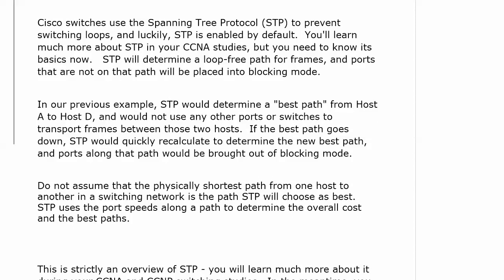Cisco switches use STP to prevent switching loops. STP is a layer 2 protocol — it has nothing to do with routing loops; it's strictly a switching loop prevention tool. You're going to learn a lot more about configuring STP in your ICND2 studies, but here are the fundamentals: STP determines a loop-free path for frames, and ports that are not on that path are put into blocking mode. STP picks the best path, opens the ports along that path, and the other ports go into blocking mode. If that best path goes down, STP recalculates its port costs, determines the new best path, and brings ports along that path out of blocking mode.